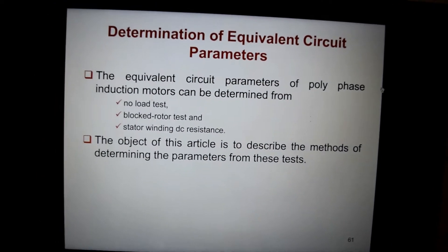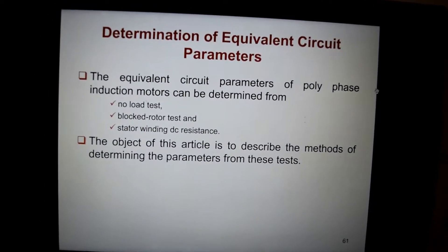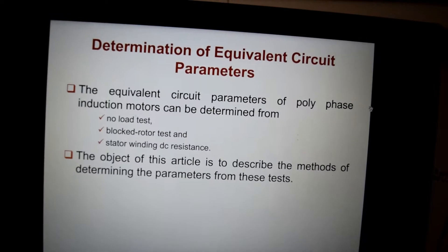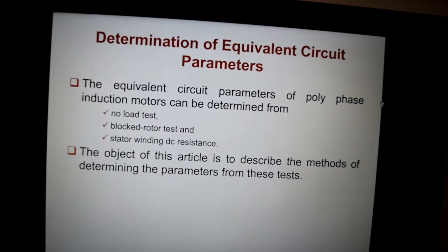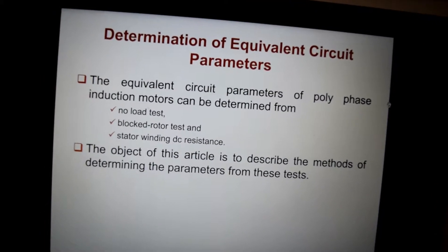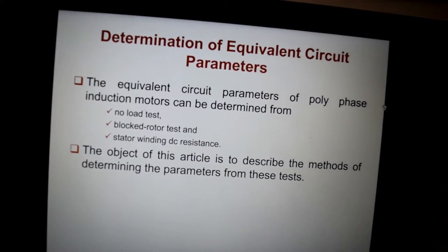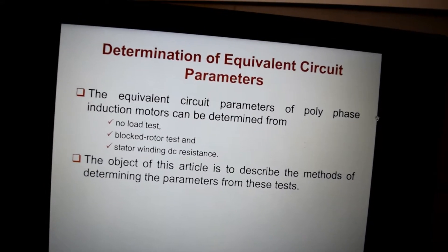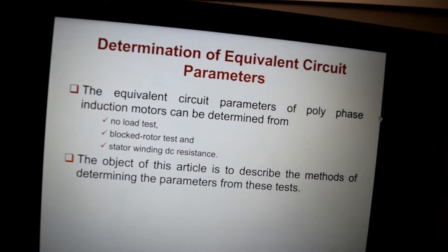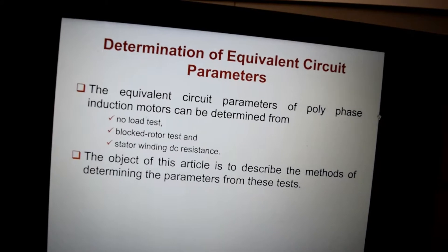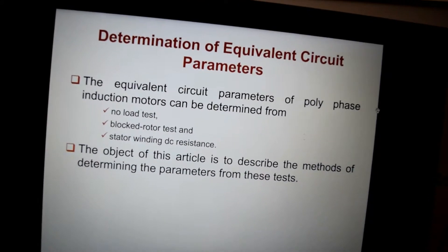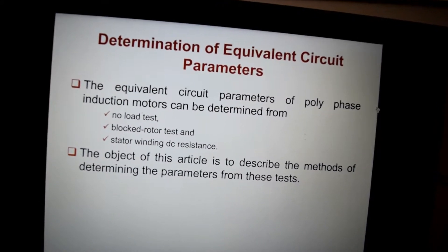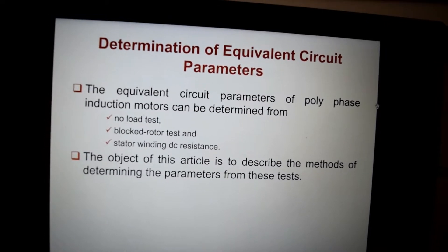Hello guys. Today we're going to see how to determine the equivalent circuit parameters. As we saw in class, in order to determine the equivalent circuit parameters, we should have to do three tests. The first one is the no-load test, the second one is the blocked rotor test, and the third will be the stator winding resistance test.